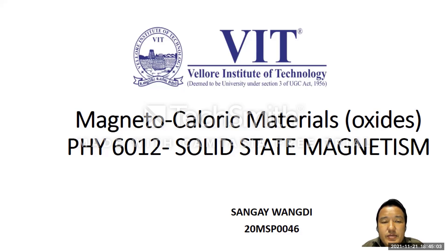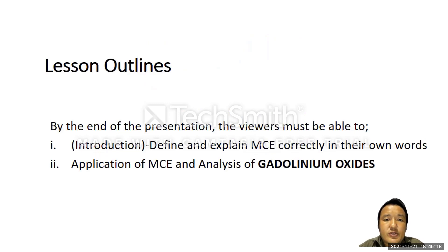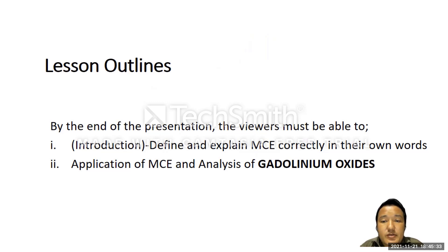Magnetocaloric materials are basically magnetic materials which exhibit an important property called magnetocaloric effect. By the end of this presentation, viewers must be able to define and explain what is magnetocaloric effect, explain its applications, and I'll also be discussing the role of gadolinium oxides, which is another type of magnetic material.